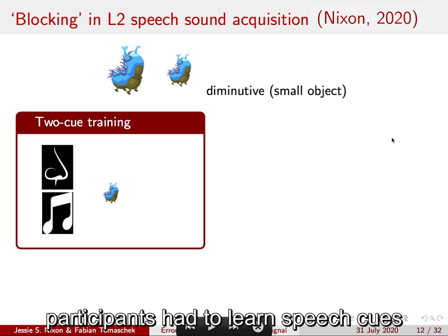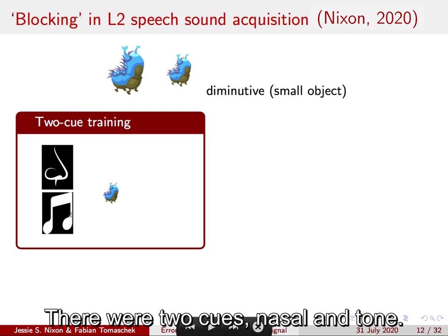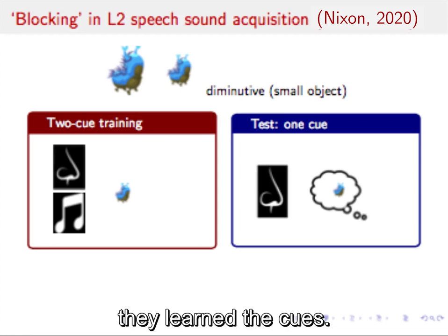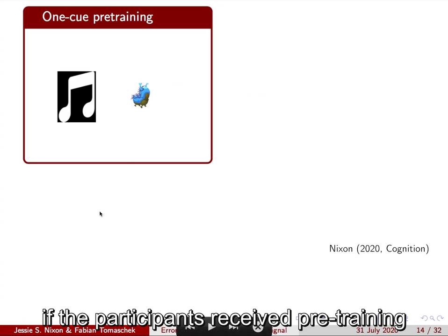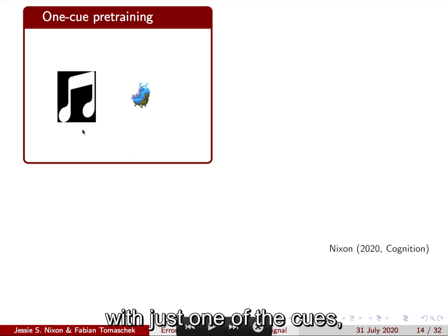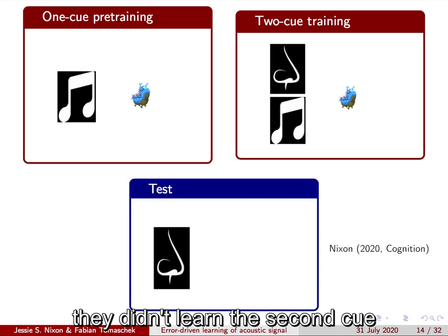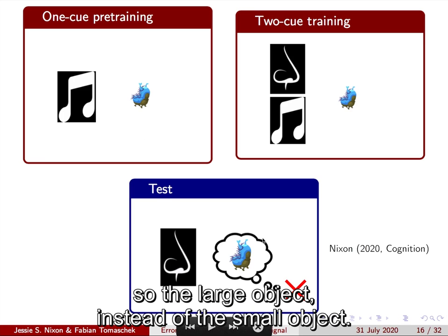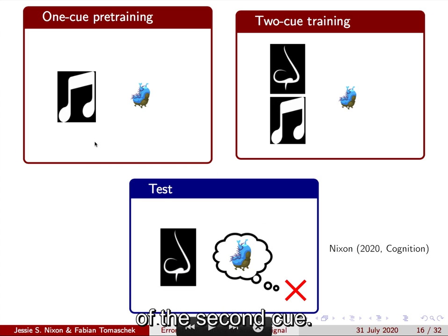In this study, participants had to learn speech cues for the diminutive versus the large objects. There were two cues, nasal and tone. If participants were trained with the two cues simultaneously, they learned the cues. However, just like Kamin's experiment with rats, if the participants received pre-training with just one of the cues, say just the tone, before the two cue training, they didn't learn the second cue and often selected the wrong object. So the large object instead of the small object.